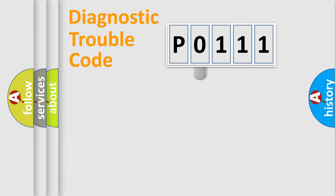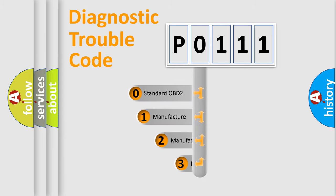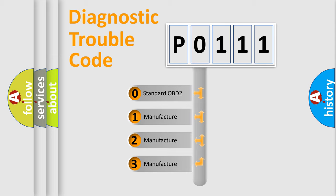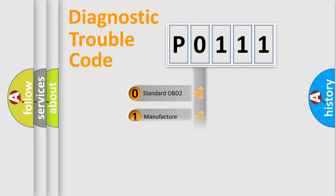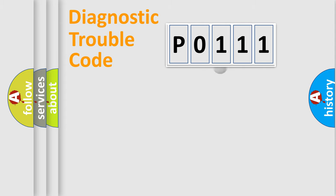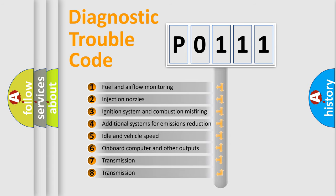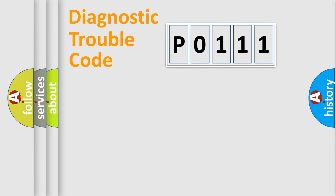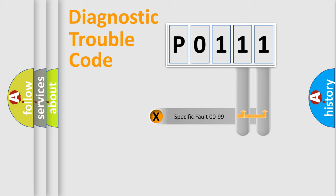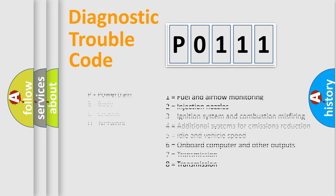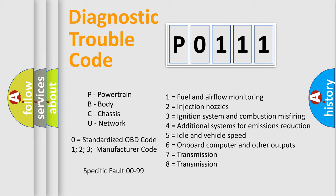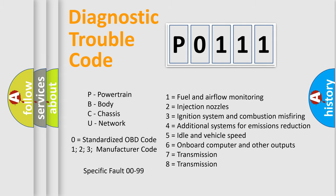This distribution is defined in the first character of the code. If the second character is expressed as zero, it is a standardized error. In the case of numbers 1, 2, or 3, it is a more specific car-specific error. The third character specifies a subset of errors. The distribution shown is valid only for the standardized DTC code. Only the last two characters define the specific fault of the group. This division is valid only if the second character code is expressed by the number zero.